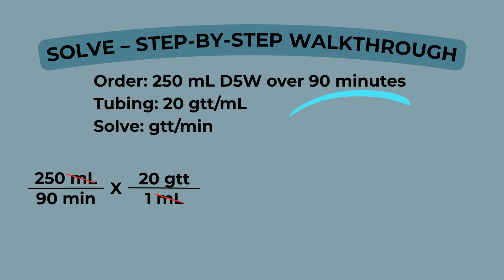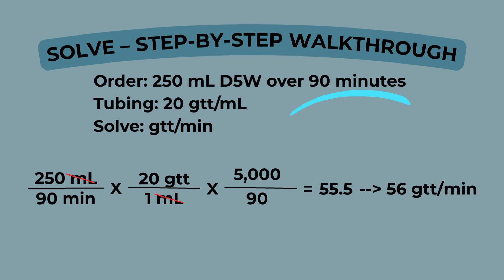Multiply across the top, then multiply across the bottom, then divide. 5,000 divided by 90 equals 55.5. And finally, round to the nearest whole drop. 56 drops per minute is your final answer.